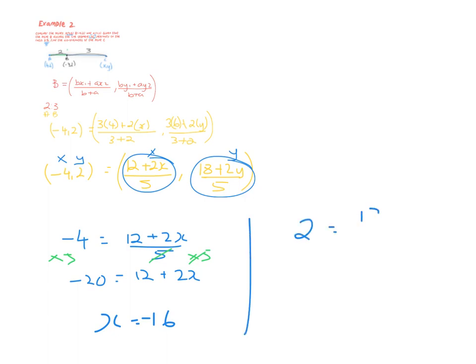On the other option, I have 2 equals (18 + 2y)/5. Again, multiply both sides by 5 and I will get 10 equals 18 + 2y. Solve on down and you should get y equals -4.